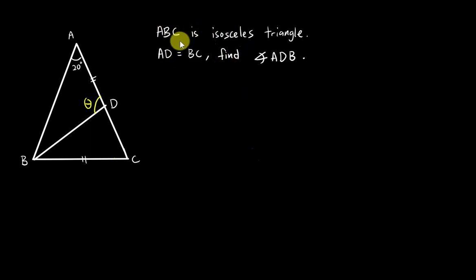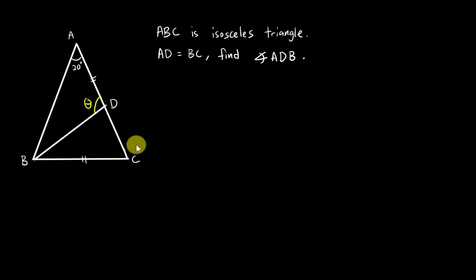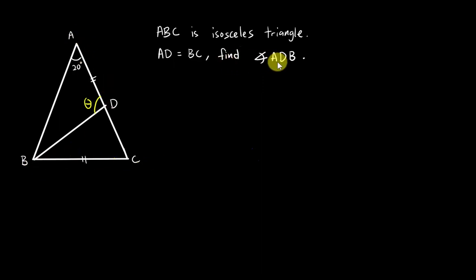So for this question, you have some information. ABC is an isosceles triangle, so we know the length of AB is the same as the length of AC. We also have another piece of information: AD equals BC — AD is the same length as BC. They ask us to find the angle ADB.